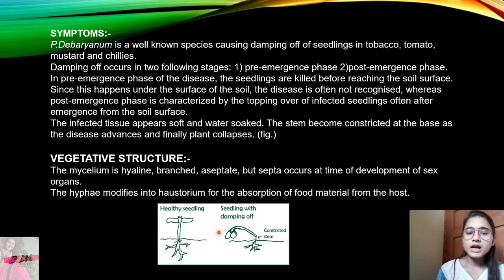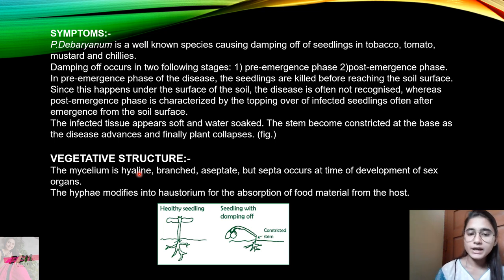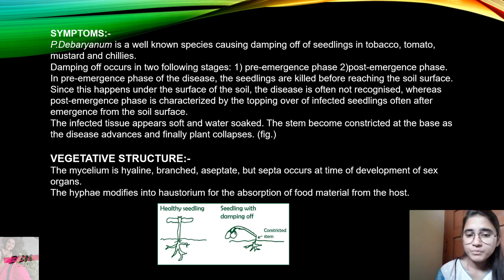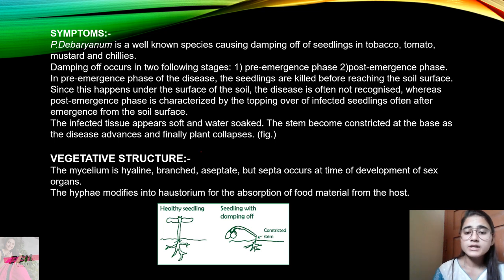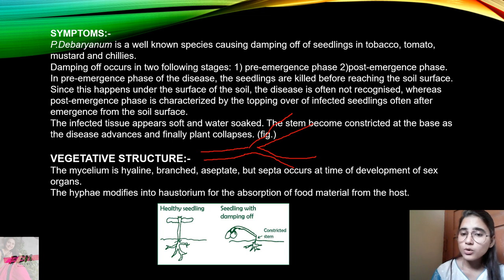Regarding the vegetative structure: the fungus has a mycelium that is hyaline, meaning colorless. The mycelium is branched and aseptate — meaning the septum is not present in the mycelium. This is the branched structure of the mycelium.